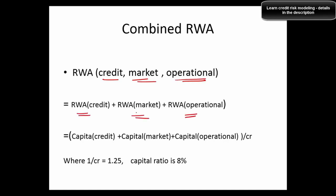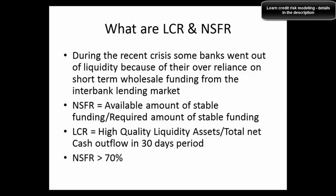What is combined risk-weighted assets? It combines risk-weighted assets for each type of risk — credit risk, market risk, and operational risk — through a simple addition. What are LCR and NSFR? During the financial crisis, banks ran out of liquidity due to over-reliance on short-term wholesale funding from the interbank lending market. Basel 3 therefore required these two ratios to be reported, ensuring banks have enough liquidity to withstand short-term liquidity stress.